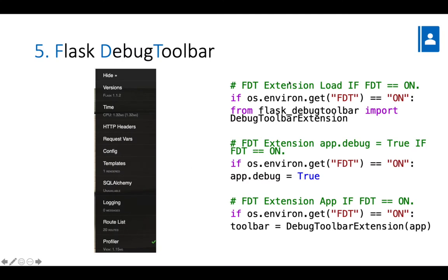Flask debug toolbar is actually based on the Django debug toolbar and it helps us understand what's happening in the background - how the Flask micro framework works in terms of the templates, the request variables, the configuration, the route list and so on.